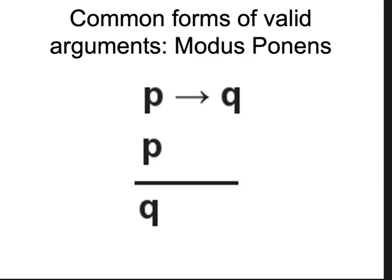Modus ponens is a very important argument form. It says: if P, then Q — that's premise one. We're assuming these things. Premise two is P — P actually happens. And then we're able to derive Q. It's a valid argument form. Why? Because if the premises are true, the conclusion must also be true.